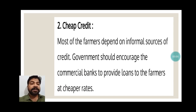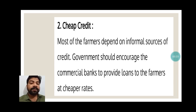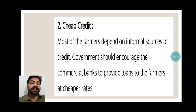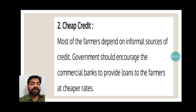The next point is cheap credit. Most farmers depend on informal sources of credit. The government should encourage commercial banks to provide loans to farmers at cheaper rates. There are two types of loans — formal and informal. Informal loans mean borrowing money from a friend or relative. Formal loans mean visiting a bank and taking a loan by providing proper certificates or property papers. The government should open more commercial banks so farmers can get loans at cheaper rates.